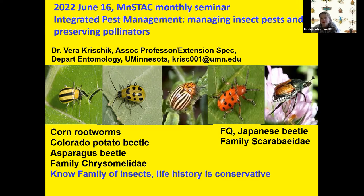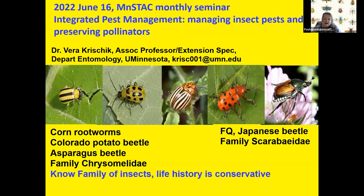Beetles are my favorite because they have those elytra with all that sculpturing that gives colors in spots or stripes. Here is a bunch of beetles: the yellowy ones are two different kinds of corn rootworms, the one with white stripes is a Colorado potato beetle, the one with the red body and black is an asparagus beetle. They're all in the family Chrysomelidae, and if you look at them, there's a certain body shape — the head is small compared to the thorax, to the abdomen.